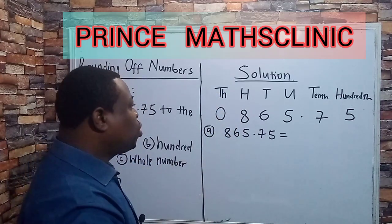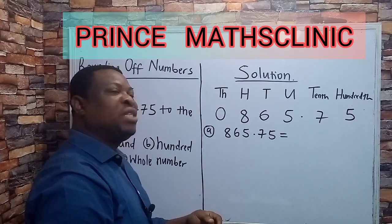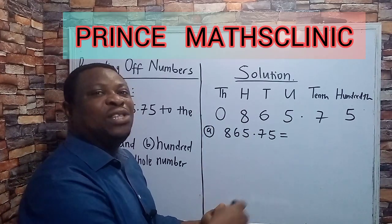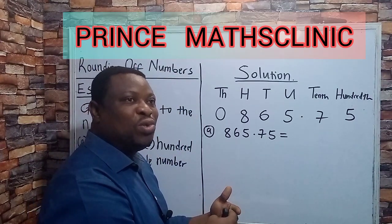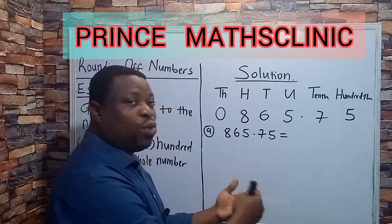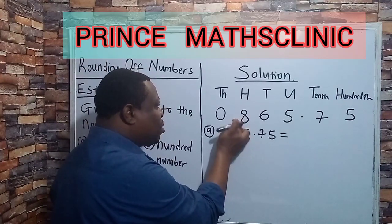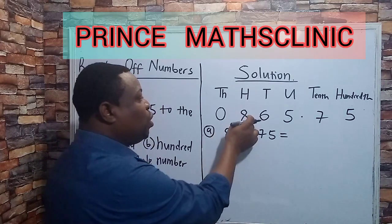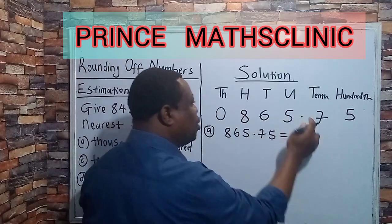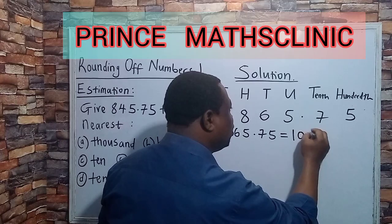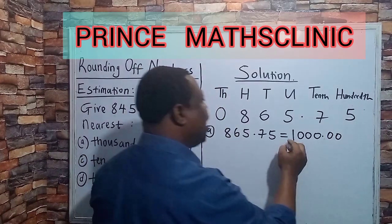To estimate to the nearest thousand: looking at 865, eight hundred is 800 out of a thousand, so it is closer to a thousand than to a hundred. Eight is already above 5 on our number line, so you change it to 1 and add it to the thousands place. This becomes 1, and all other numbers become zero — so the number becomes 1000.00.